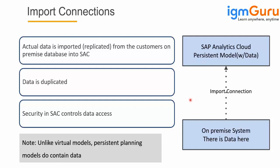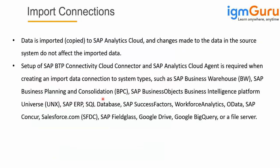In scenarios where you need planning, you must go for import connections. The other case is when you have poor performance due to the physical location of servers, in which case you can also use import connections. Remember that data is duplicated and security authorizations have to be recreated in SAC. Also, changes made to the data in the source system do not affect the imported data. If something changes in your source system, you need to recopy it or schedule a job to copy it again to SAC to see the new changes. Whereas with live connections, since it is real-time, any data change in the source system is automatically reflected in SAC when you execute the dashboard.